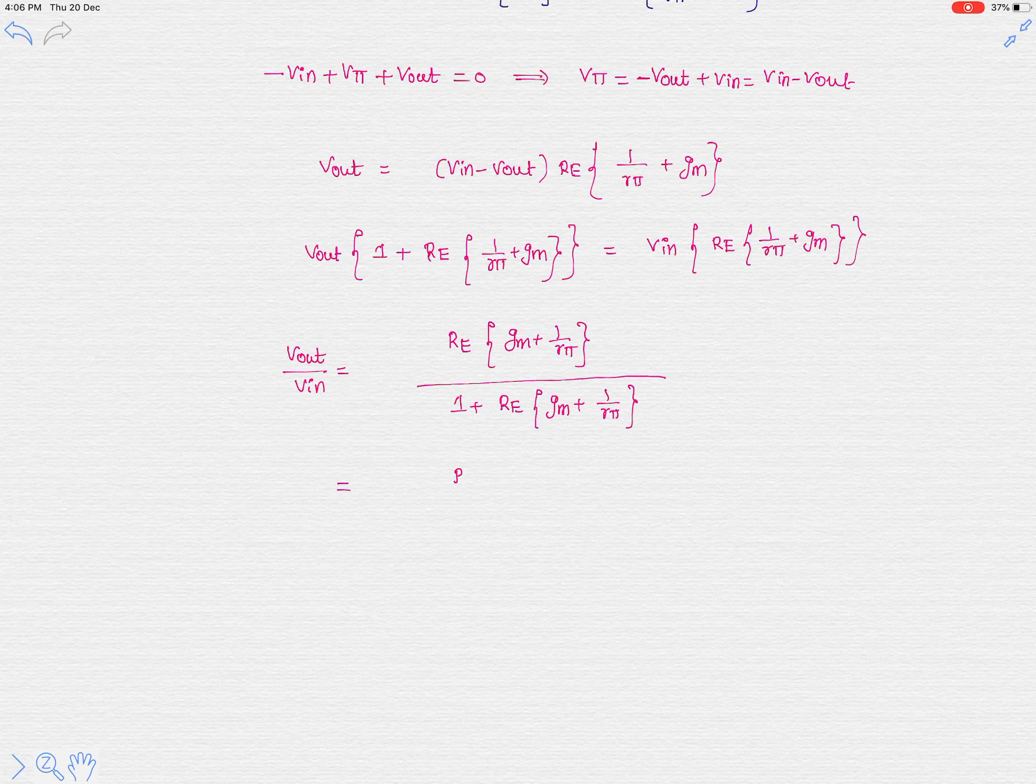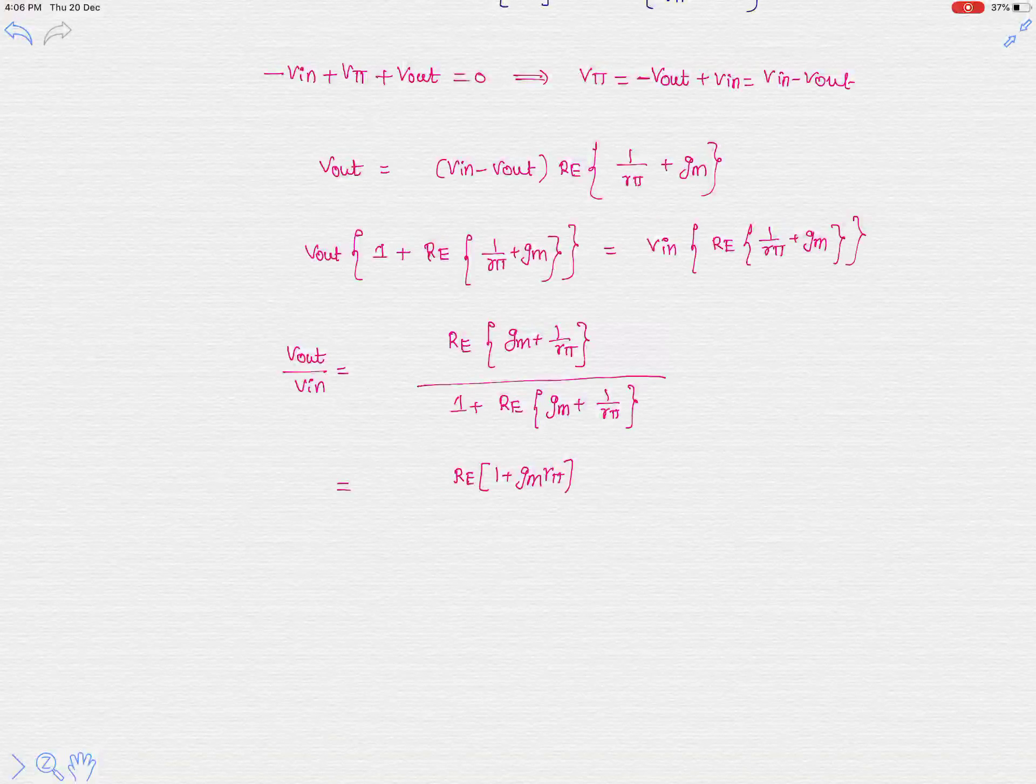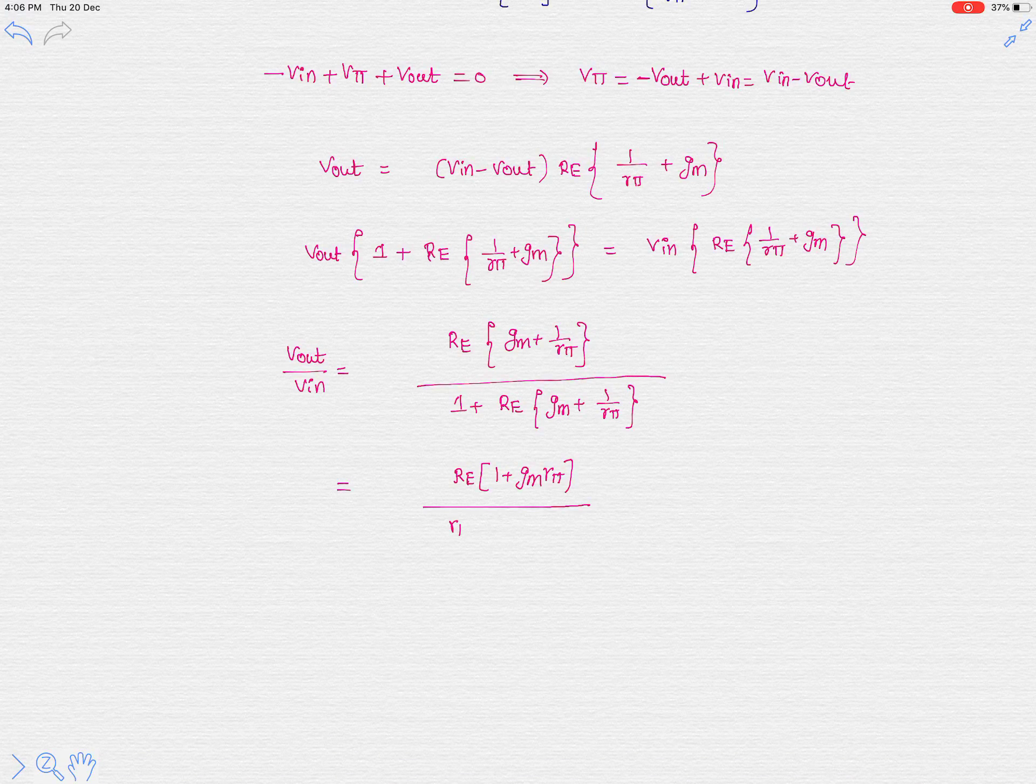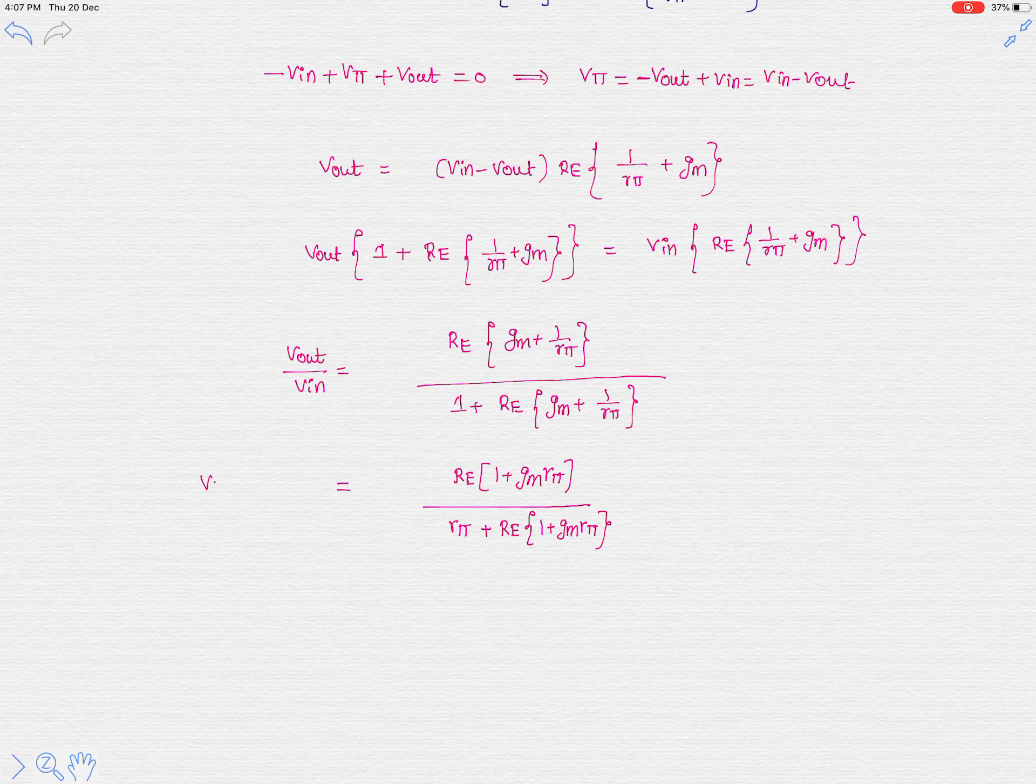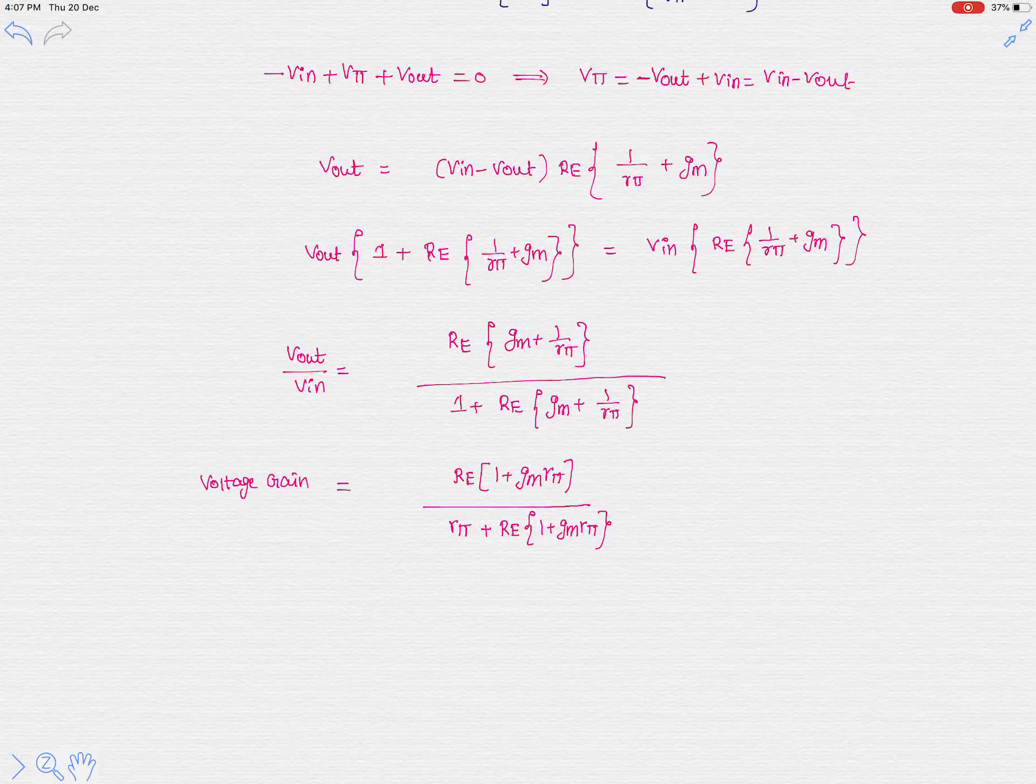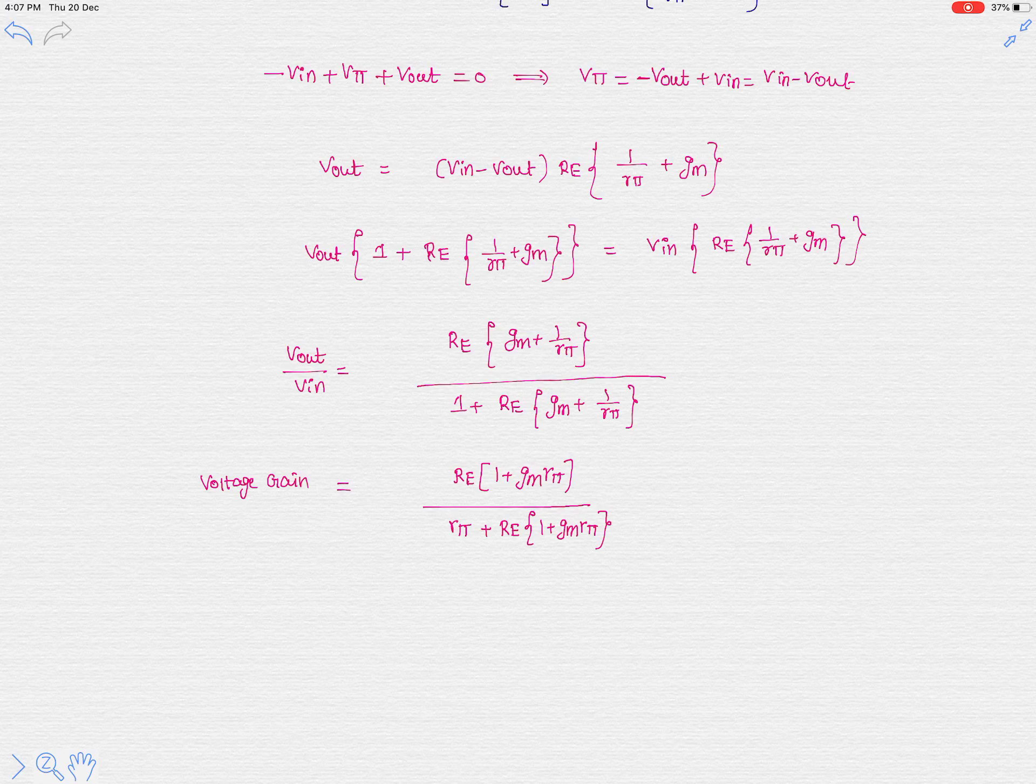By rearranging the terms we can tell it is r_E multiplied with 1 plus gm r_π divided by r_π plus r_E times 1 plus gm r_π. So this is the final expression that we are looking for. This is known as voltage gain. In this way we can analyze this kind of amplifier topology. Thank you for watching, please subscribe to my channel.